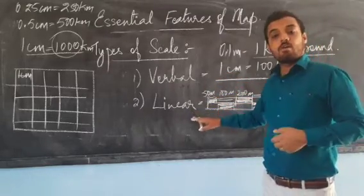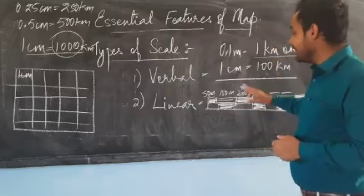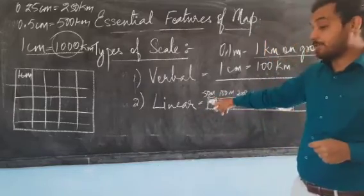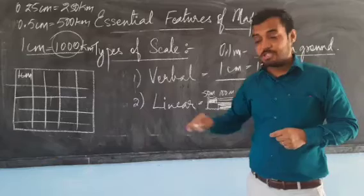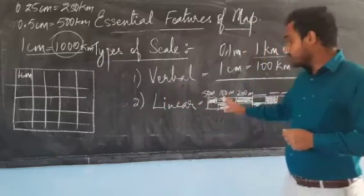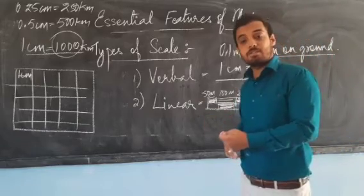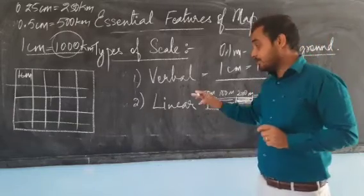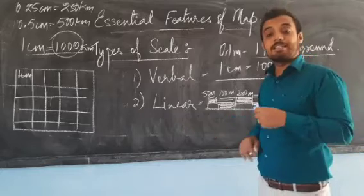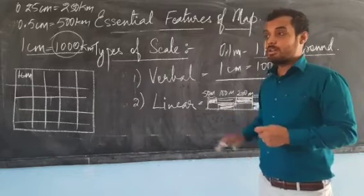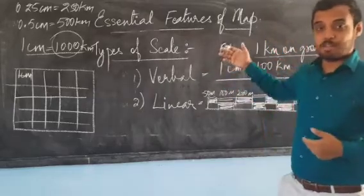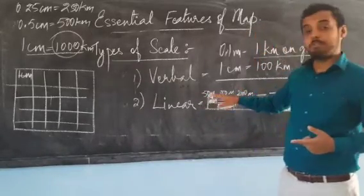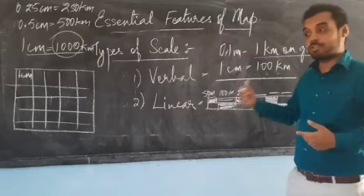Now comes the linear scale. A linear scale shows us the exact distance on the ground. If it shows 50 meters on the scale, the walking distance is 50 meters. If it shows 100 meters, it is 100 meters walking distance. If it shows 200 meters, then it is 200 meters on the ground as well. It is not imaginary — it shows the exact real-world distance.